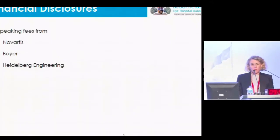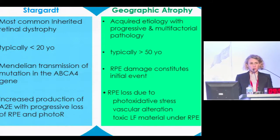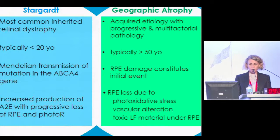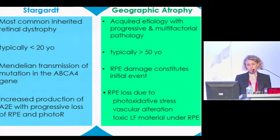Why does this matter? Because on paper, these are two very different diseases. Stargardt is the most common inherited retinal dystrophy, but it starts very young — typically patients present at less than 20 years old. There is a Mendelian transmission of the mutation in the ABCA4 gene, which has been identified as the responsible gene for Stargardt, and there is an increased production of A2E with progressive loss of RPE and photoreceptors.